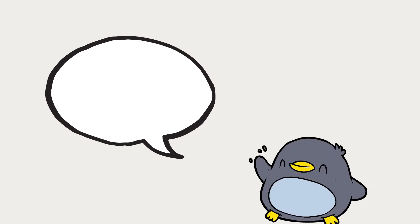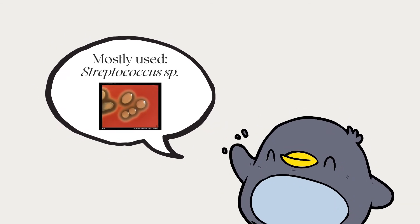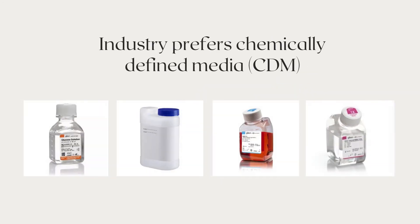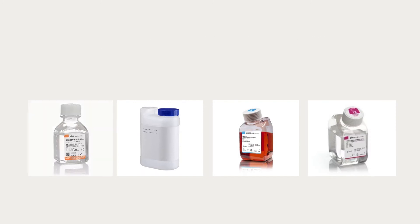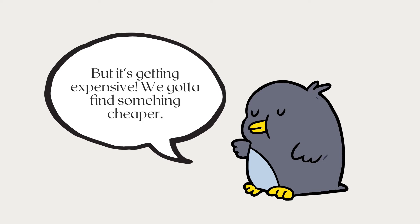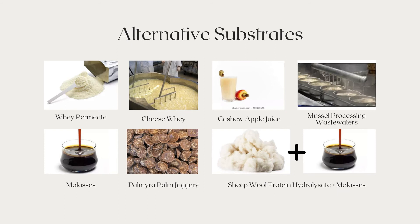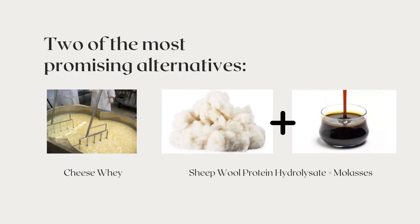This is why the Streptococci strain is currently the most favored microbe in hyaluronic acid production. Now, it is important to pick the right kind of substrate used for hyaluronic acid production. A lot of industries favor CDM, or chemically defined media. However, mainly the nitrogen and carbon sources are getting more expensive, and 80% of the production costs rely on the media. Therefore, finding alternatives or substitutes is key for more cost-effective results. Two of the most promising alternatives include cheese whey, since it can reduce the cost compared to CDM by 70%, as well as sheep wool protein hydrolysate with molasses, since molasses are found to be more promising carbon sources.